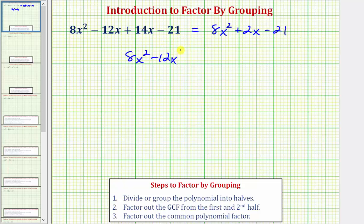Let's put a vertical line here to divide the first half and the second half. The second half would be plus 14x minus 21.